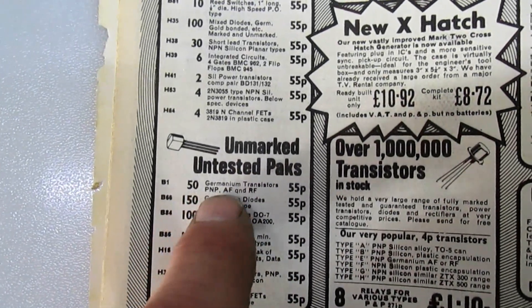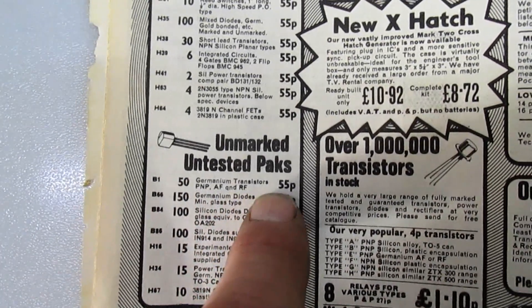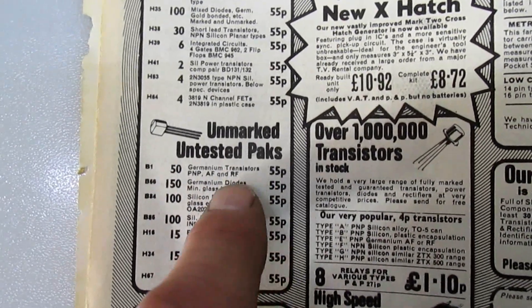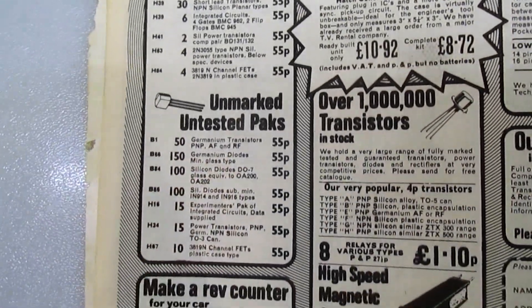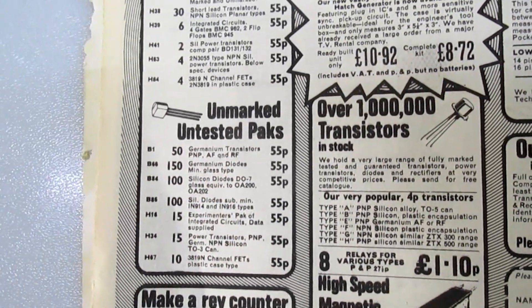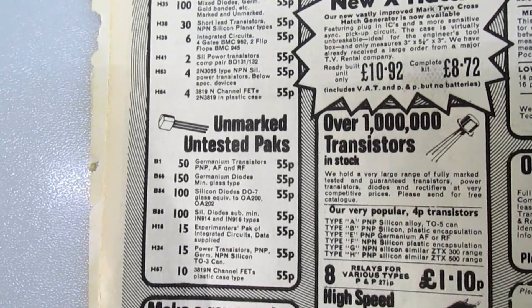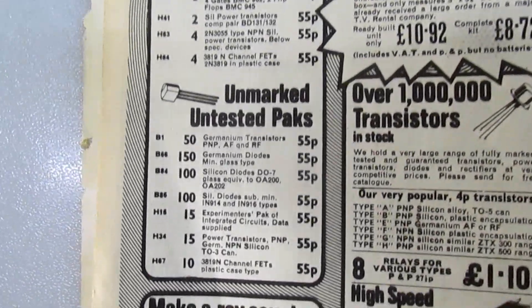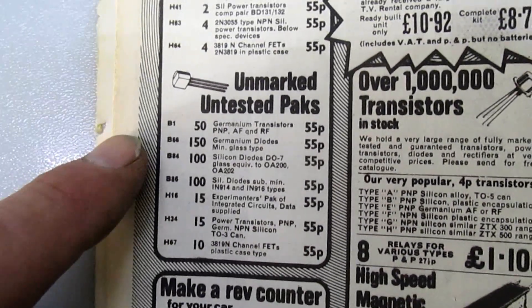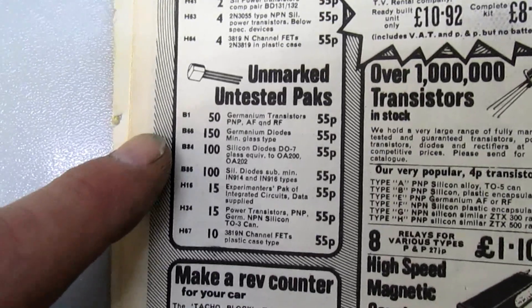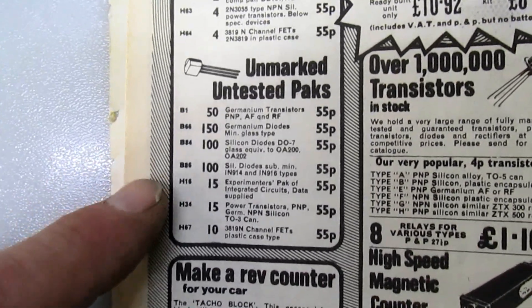You've got here 50 transistors with no number on because they're out of specification. When you buy these they could be absolutely anything, they could be rated for 20 volts, they could be rated for 100 volts. Because there's no number on them you don't actually know what they are. In a circuit running off a 9-volt battery you could put any transistor in and the chances are it would work.